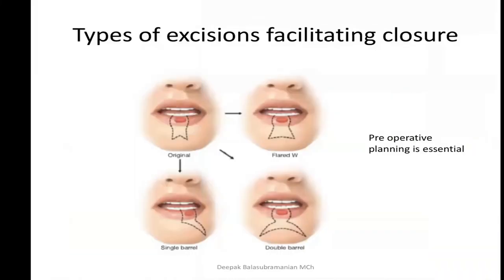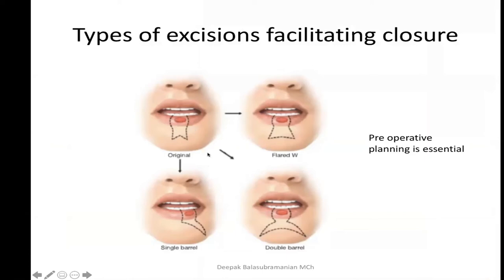There are types of excisions that facilitate closure — not just straight wound margins. You can use a flared W, a single barrel, a double barrel, or a wedge-shaped excision. These excisions result in finer, more aesthetically pleasing scars. Pre-operative planning is important when excising these tumors through and through.